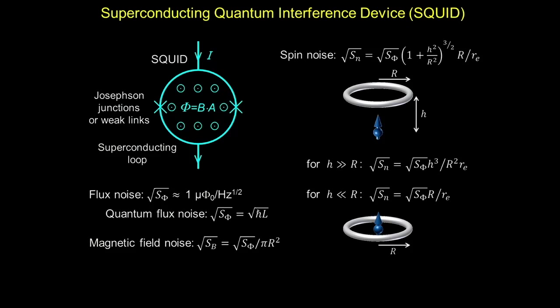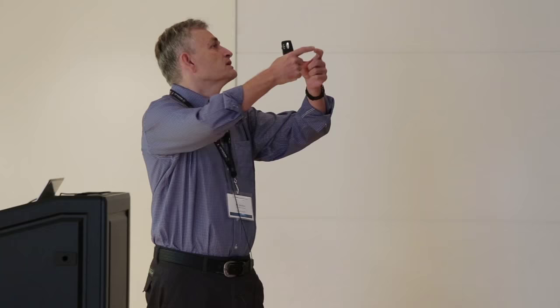However, if you bring your SQUID close to your spin — to less than the radius of the device — then your spin noise is flux noise times radius. Namely, the smaller your radius, the lower spin noise you have, and this is what we want. To understand this: the magnetic field of a dipole falls as r cubed. If you make your device smaller, you lose r squared. But if by making it smaller you can also bring it closer, you gain r cubed, so you end up gaining r.